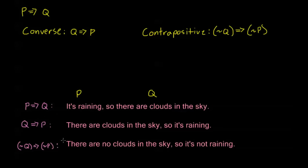Coming back, the contrapositive in this case would be not Q implies not P — or in other words, there are no clouds in the sky, so it's not raining. We notice that the contrapositive is true: if there are no clouds in the sky, then it's not raining outside. That's a true statement. So in this example, P implies Q is the same as its contrapositive, and it's not the same as its converse.